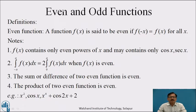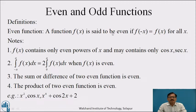Here we will see about even and odd functions. First, even function: a function f(x) is said to be even if f(−x) = f(x). That is, if we replace x by minus x, we again get the same function f(x) for all x. Then we can say that the given function is even.